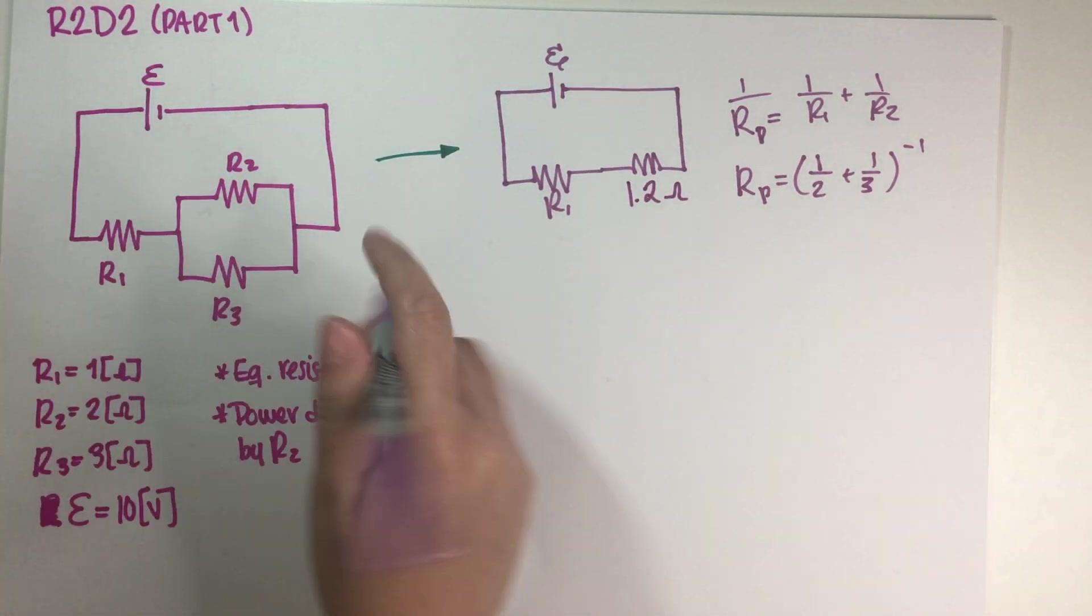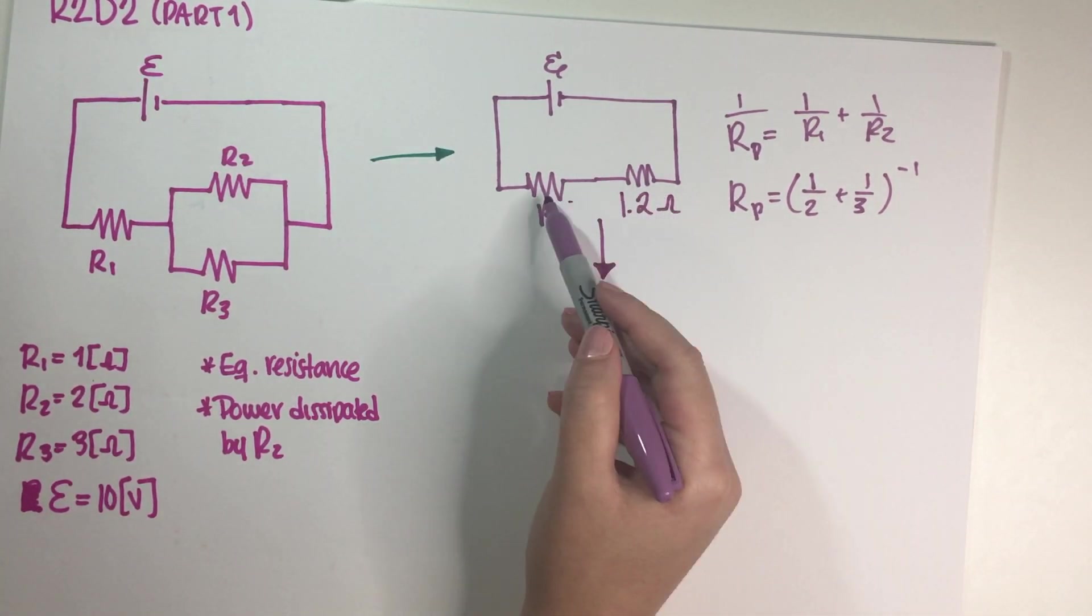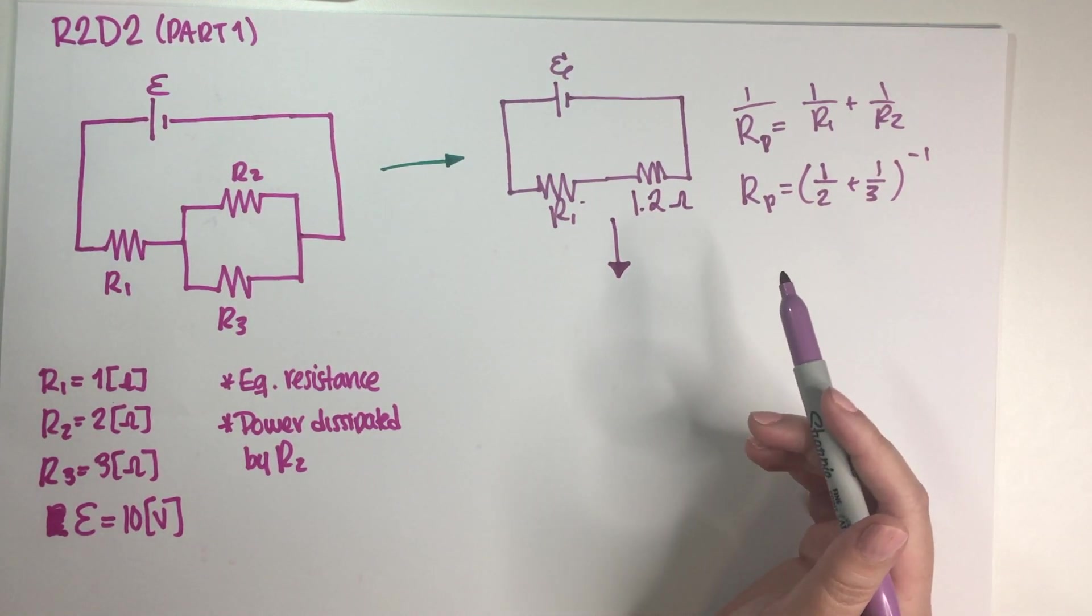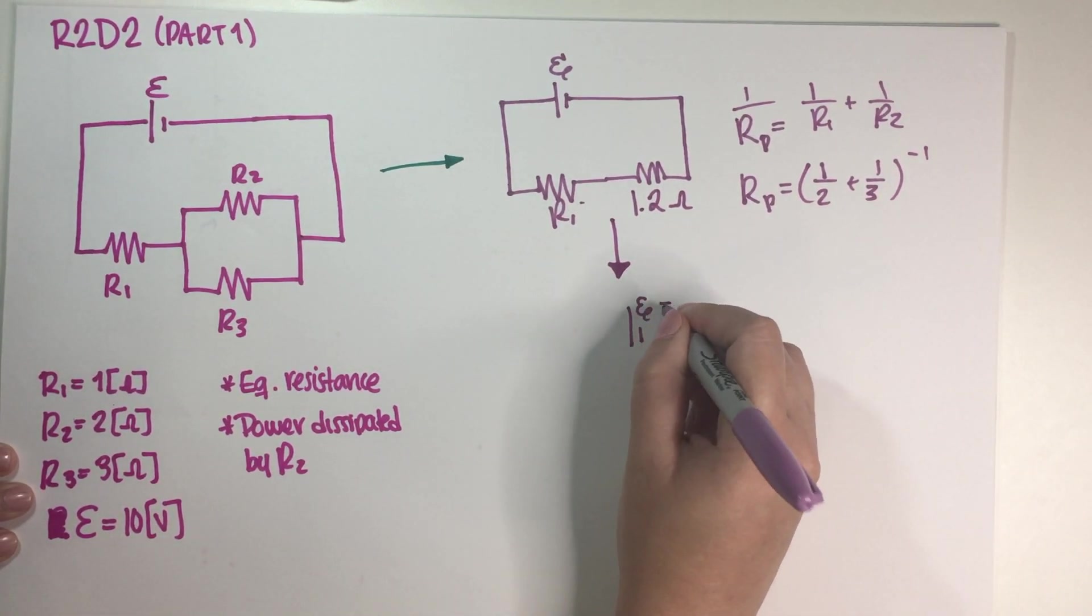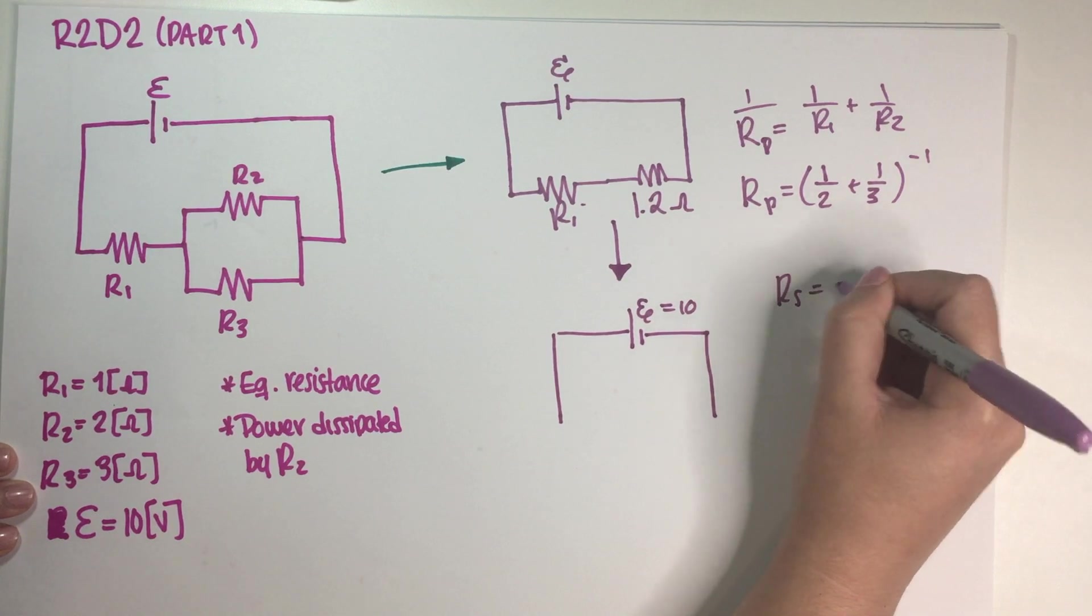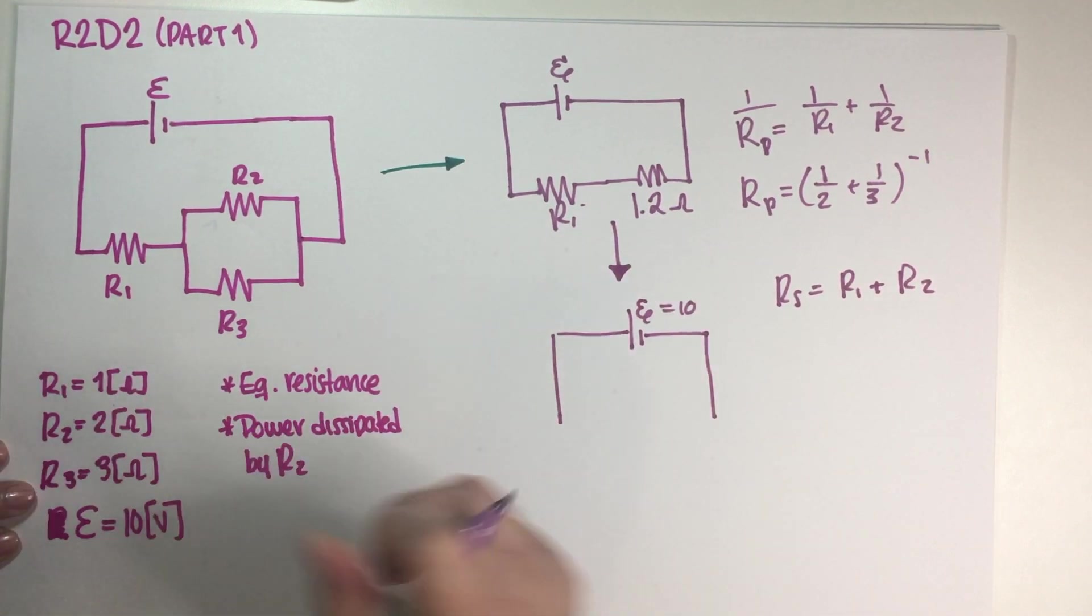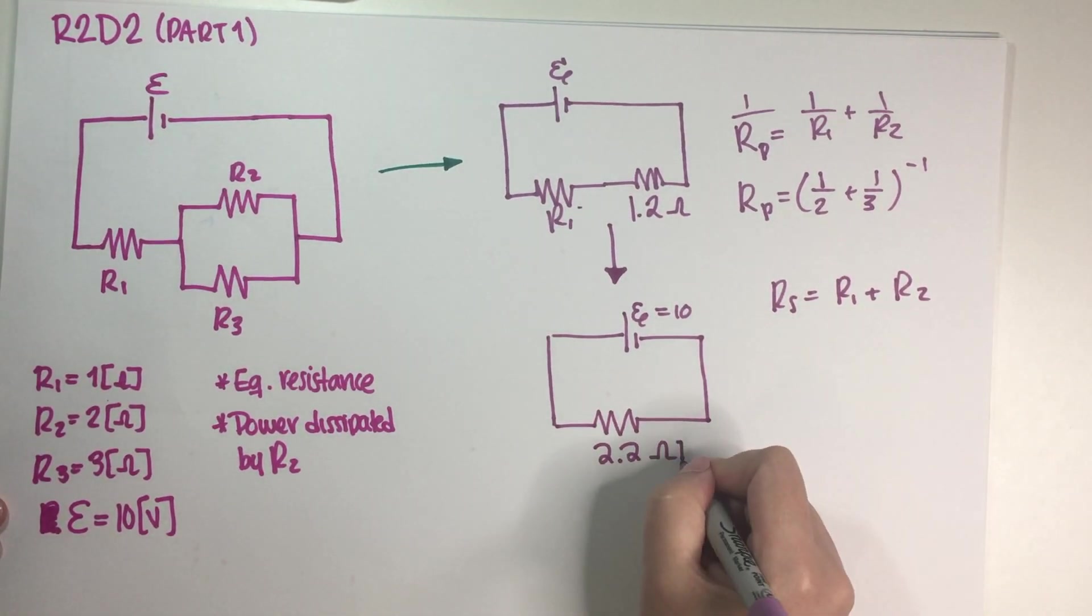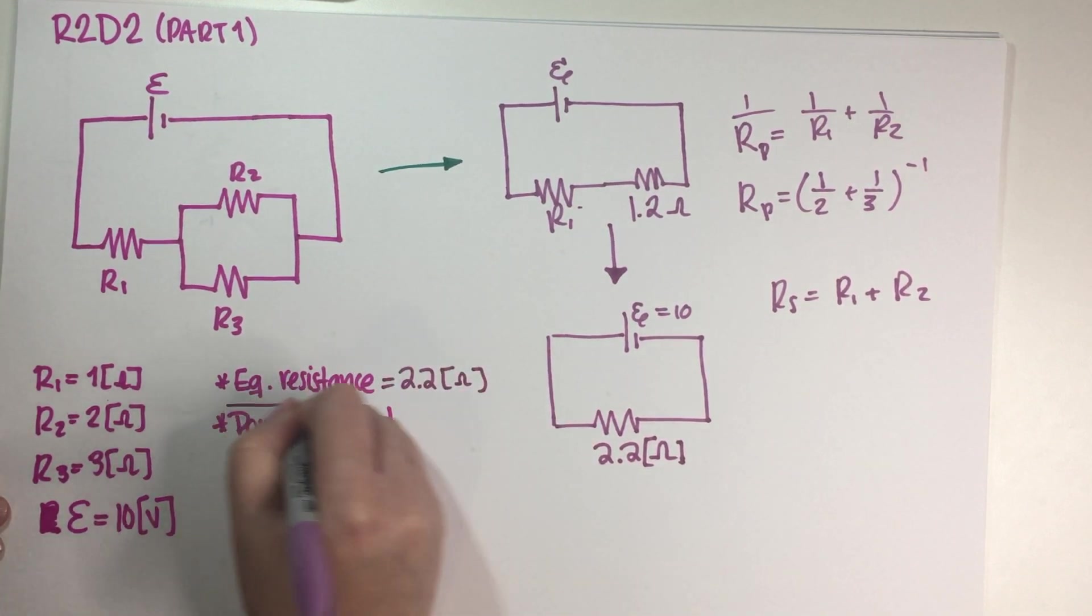And now I basically have to do this again because I need the equivalent resistance. And now these two guys are clearly in series with each other because by definition series is same current but different voltage drop. So I'm just gonna go ahead and do that. This is still the battery which is 10 volts. And adding resistors in series, let's just remember that it's really simple because I literally just add them up. So if this is 1.2 and this is 1, then this is 2.2 ohms. So the equivalent resistance is 2.2 ohms, final answer.